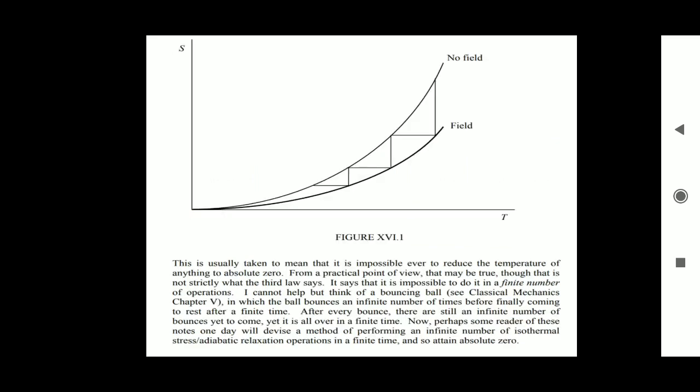Just see the figures: no field, field against S and T. This is usually taken to mean that it is impossible ever to reduce the temperature of anything to absolute zero. From a practical point of view that may be true, though that is not strictly what the third law says.